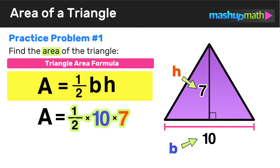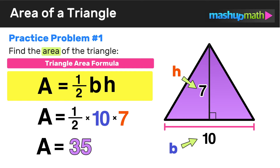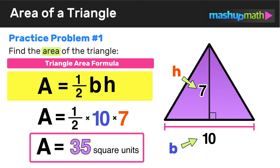Now we multiply to figure out the area. One half times 10 times 7 is equal to 35. Remember that area is measured in square units, so the area of this triangle is 35 square units. That's exactly how you use the area of a triangle formula to solve a problem.